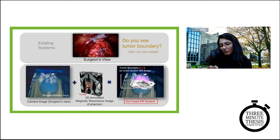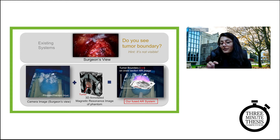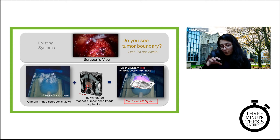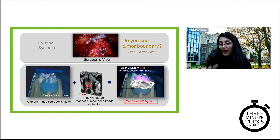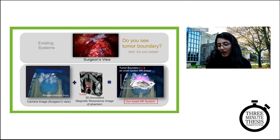So how did I do that? I estimated a few data points from the robot's perspective, estimated the location of the same data points from the camera's perspective, and then found a mathematical mapping between the two. And that gave us our augmented reality system that you can see here.